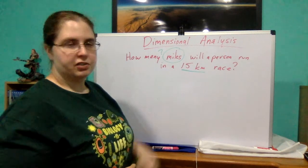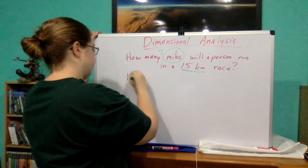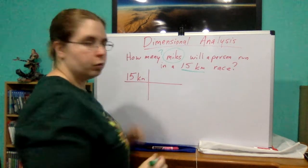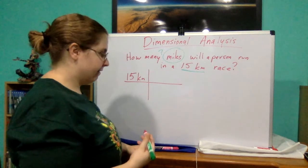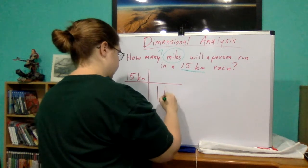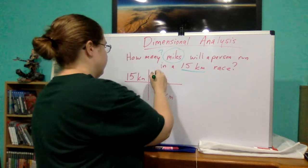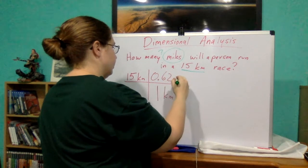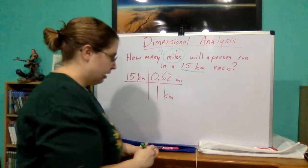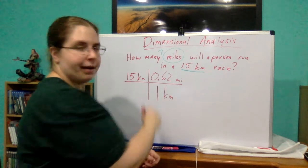Now, you always want to start off with what's known. So, I know that I have 15 kilometers. Well, I can also look up and find out that one kilometer is equal to about 0.62 miles. Now, you see how kilometers on the top and bottom?